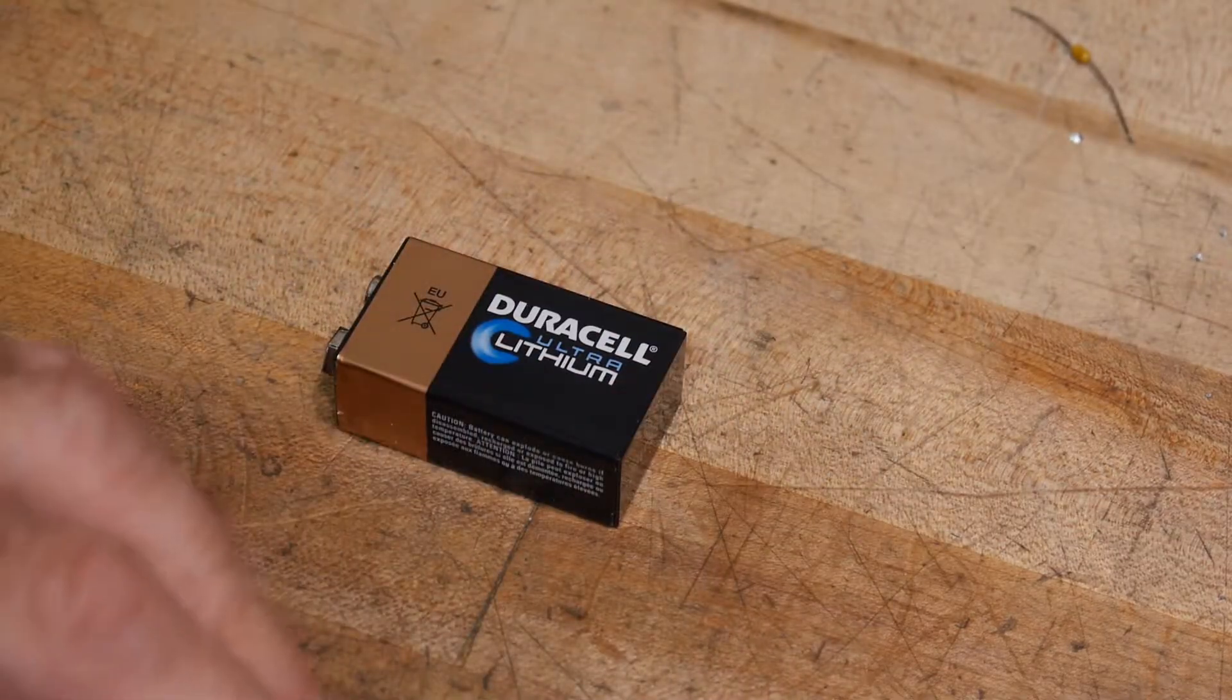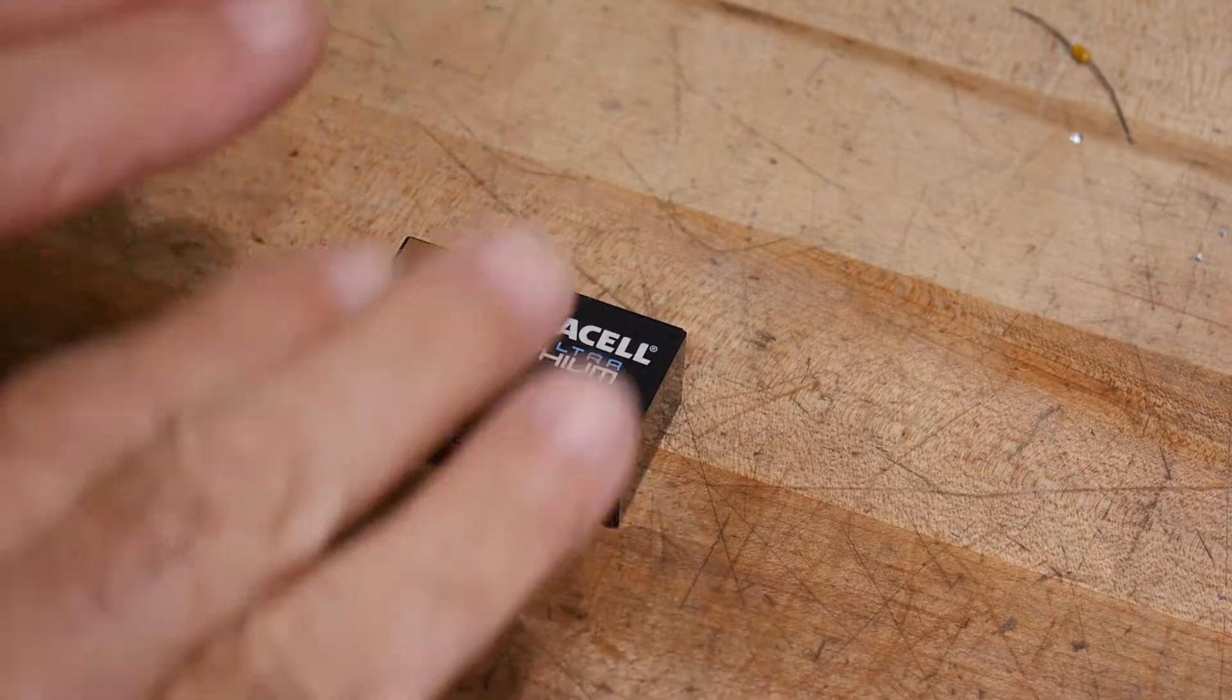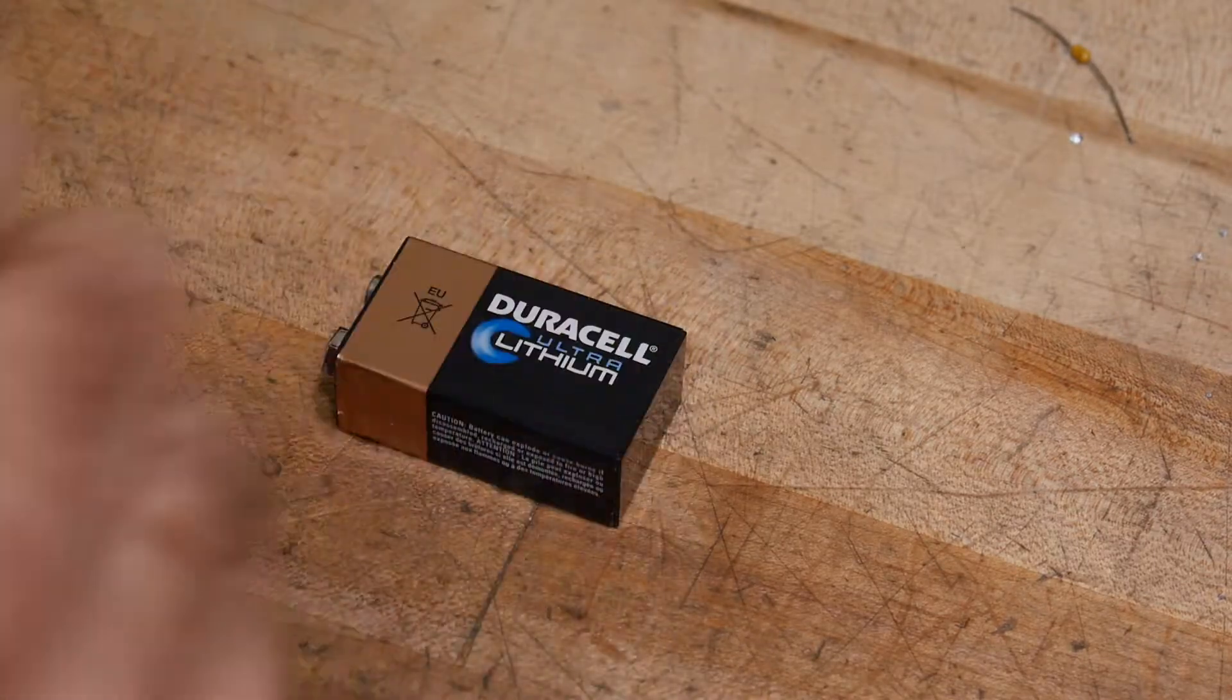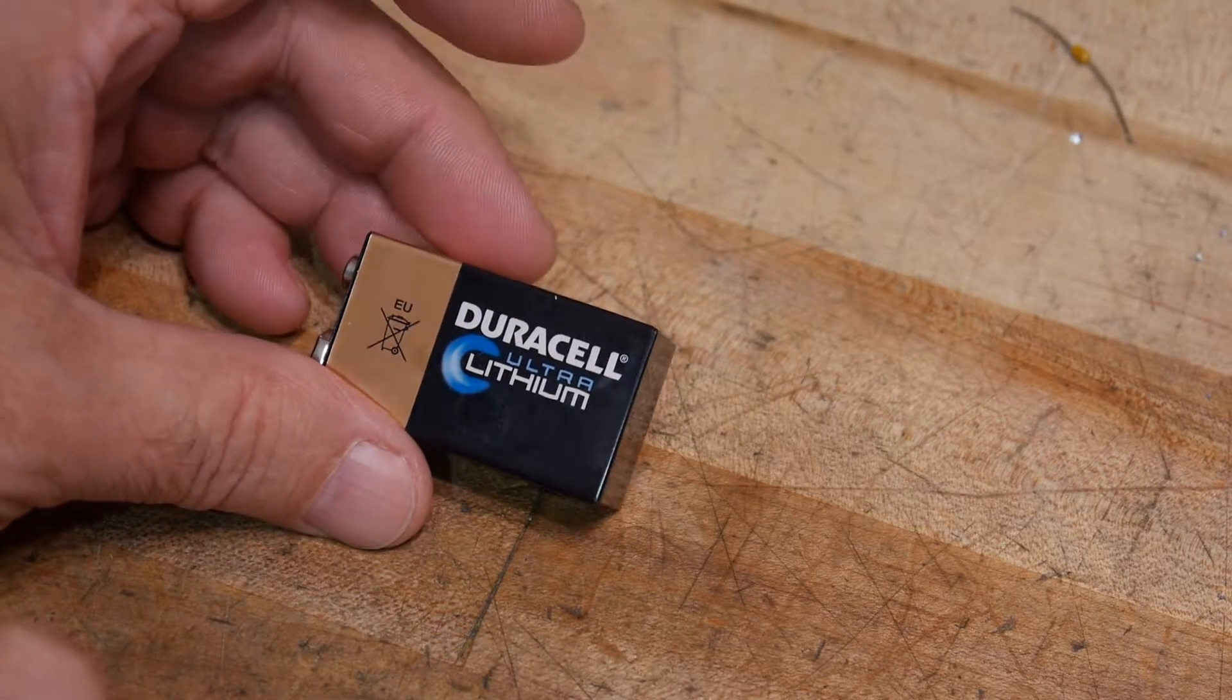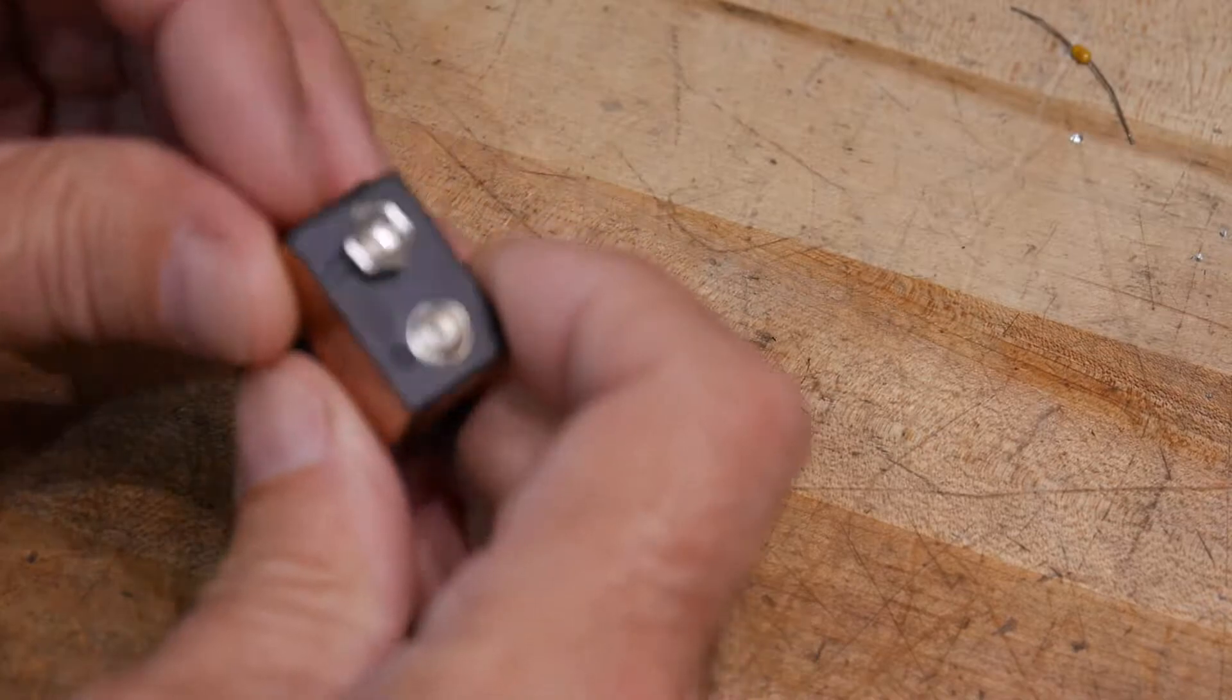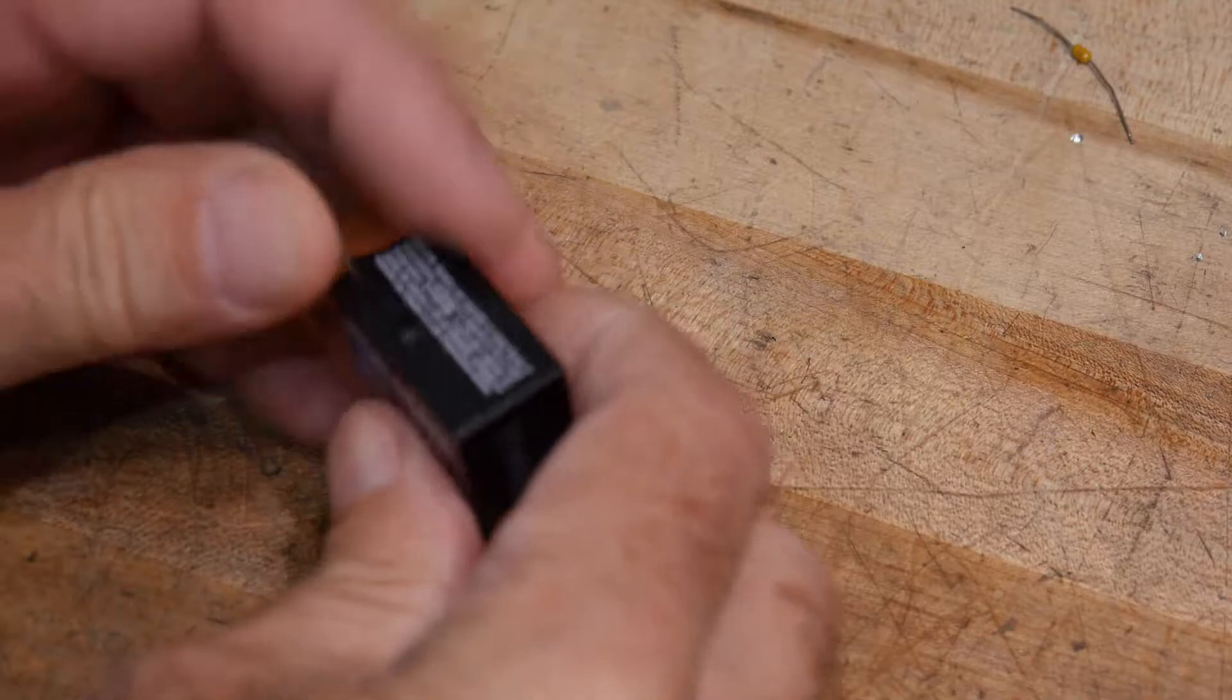They're usually these rectangular stacks in there to get up to 9 volts, but this is the lithium so I was kind of curious how the lithium was constructed. So okay, peel it here. There's a foil cover on this.